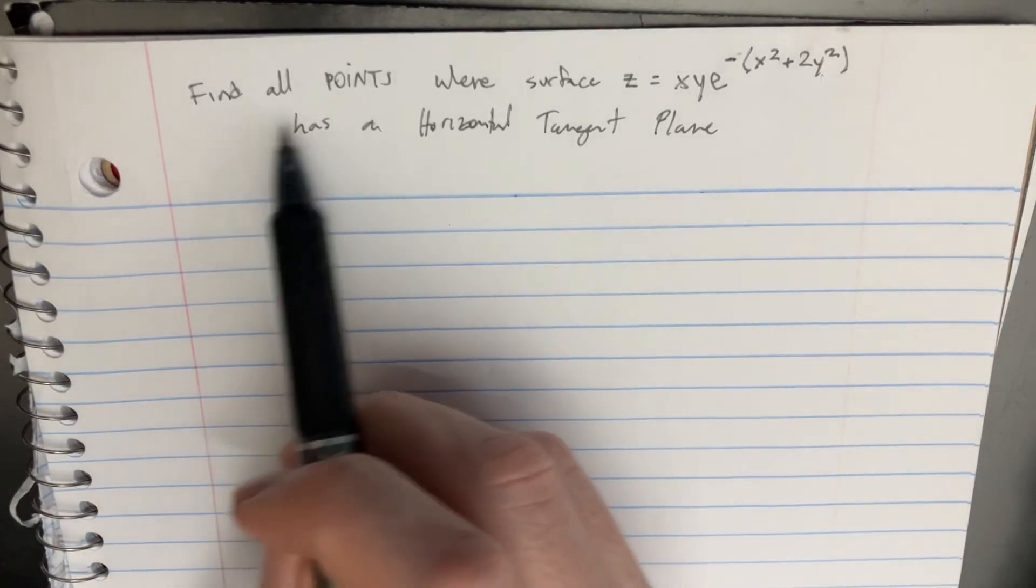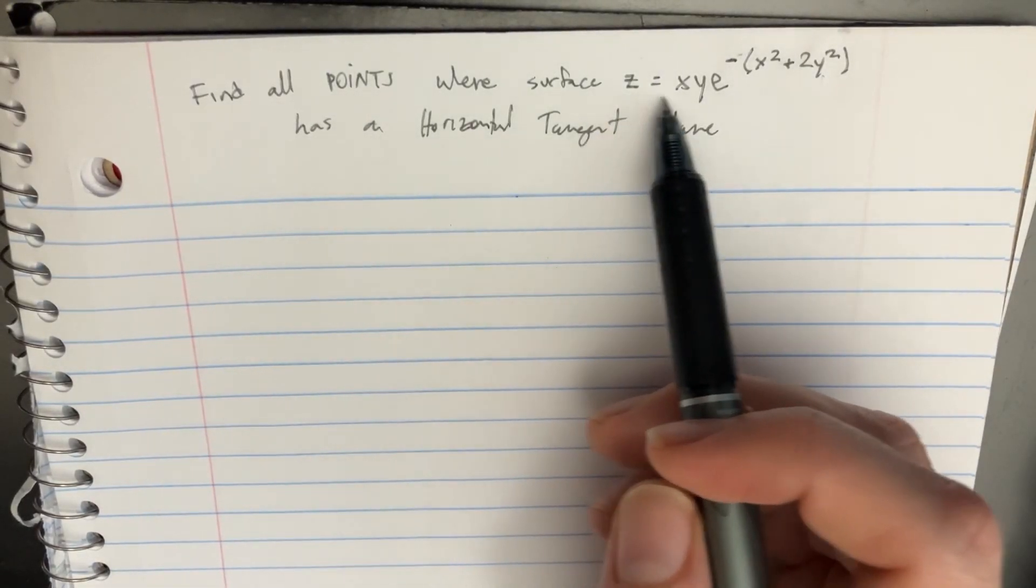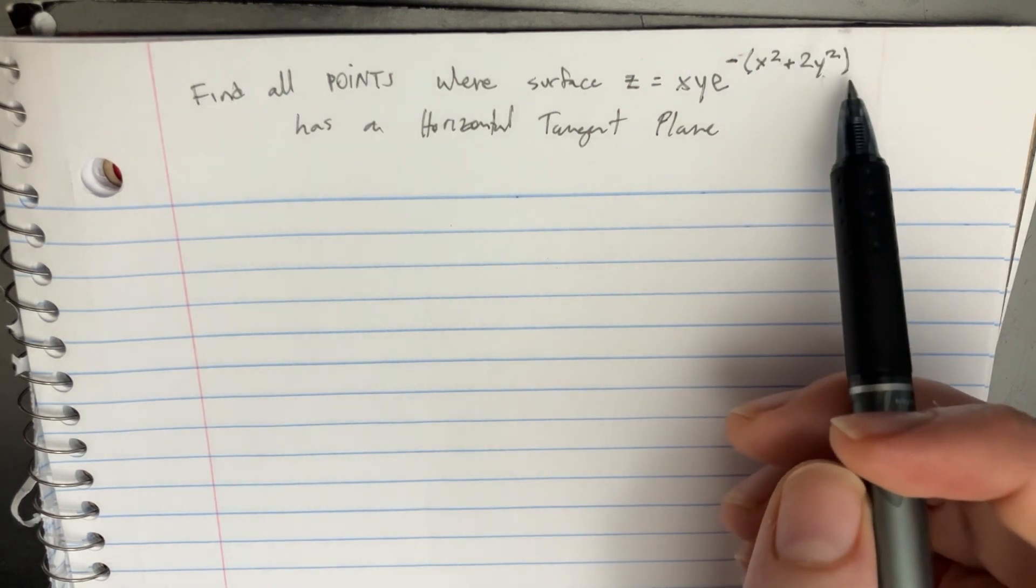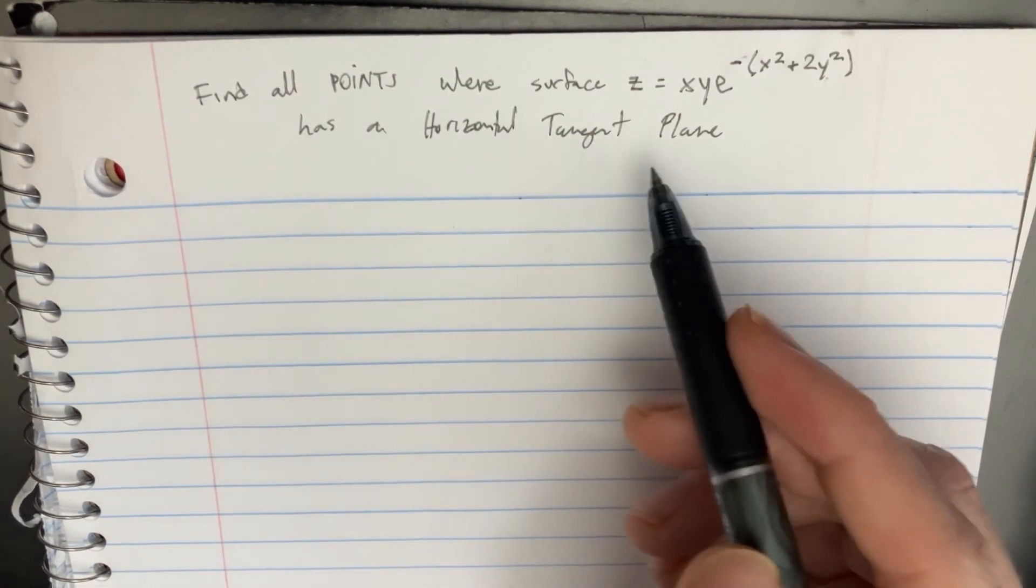In this problem, we're asked to find all the points where the surface z equals xye to the negative x squared plus 2y squared has a horizontal tangent plane.